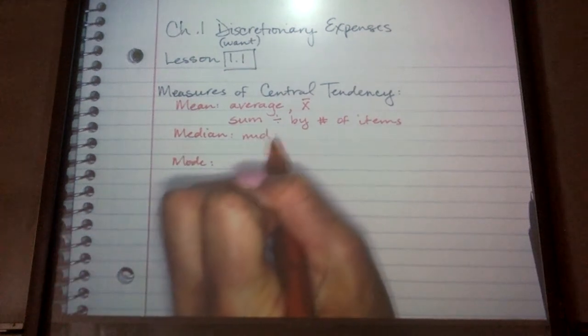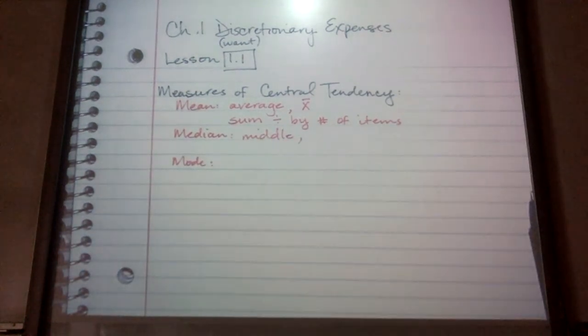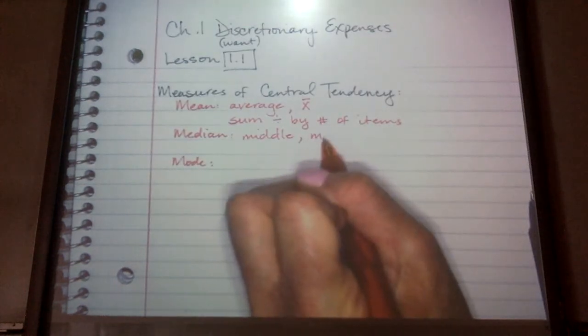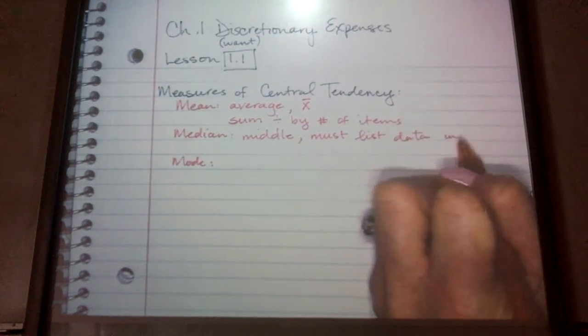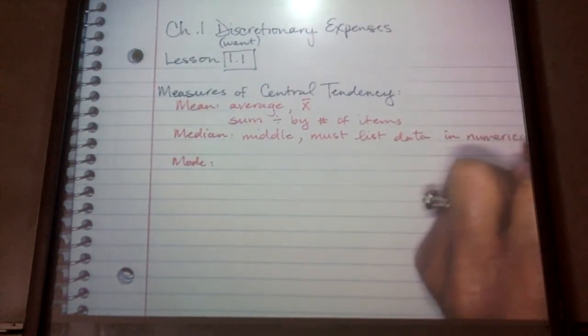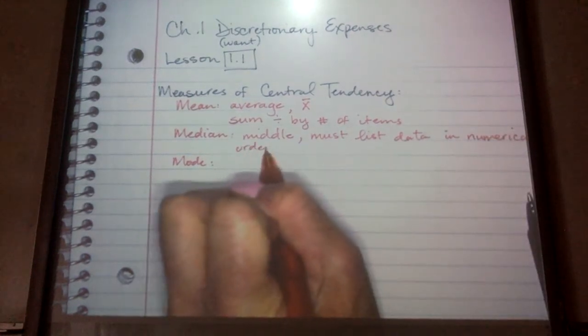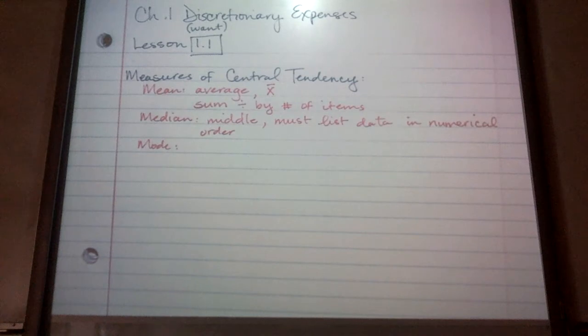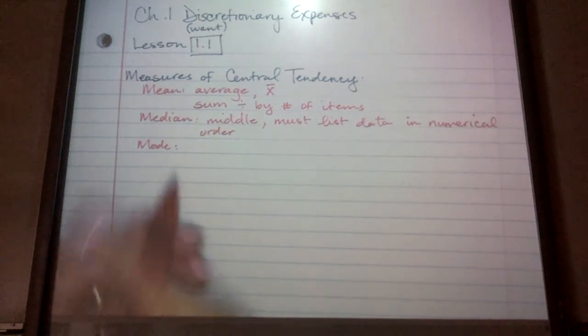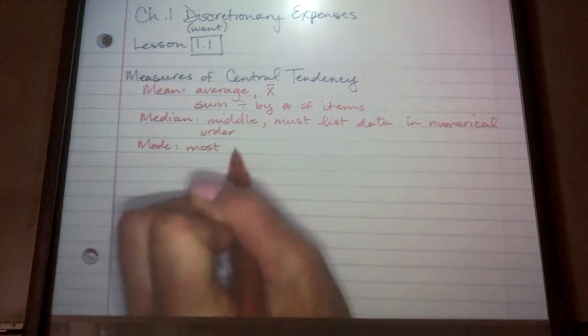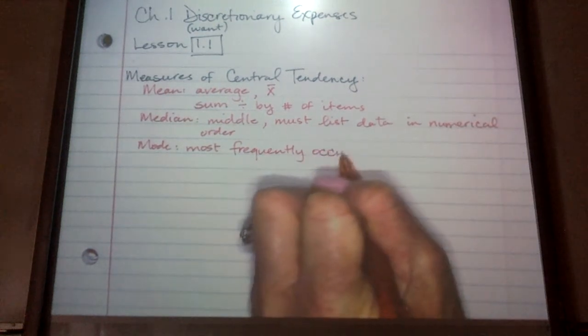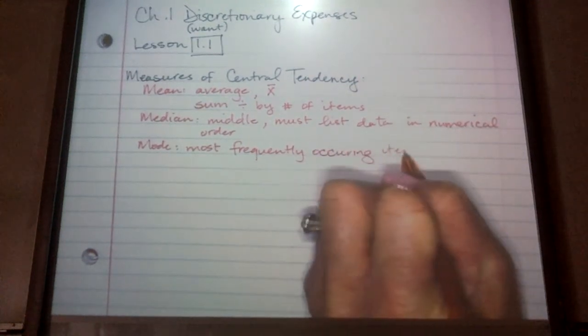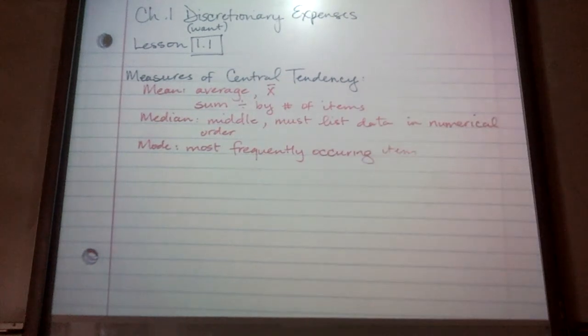Median is another word for middle. You have to find the middle of your data, but in order to do that, you must list the data in numerical order. You start with the smallest number, and you list it all the way to the largest number, and you locate the one in the middle. Mode is the number that occurs most frequently, the most frequently occurring item, and you can have more than one. You can have one mode, two modes, no mode. All of that is possible.